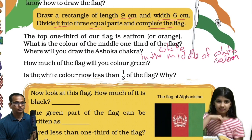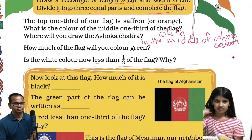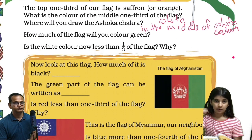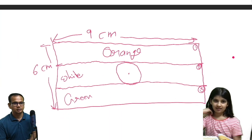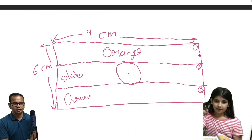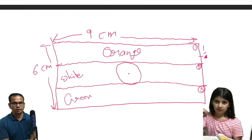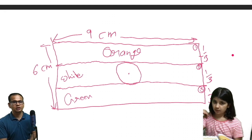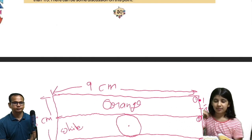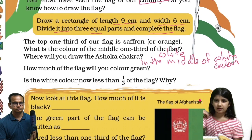How much of the flag will you color green? — One by three. See, these three parts are there. One by three this one, one by three this one. Three equal parts.